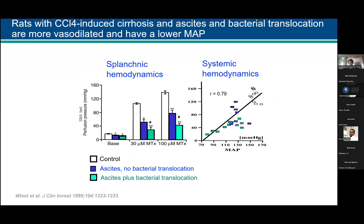Later studies used rats with carbon tetrachloride-induced cirrhosis and ascites. Controls showed ascites without bacterial translocation already had a decrease in superior mesenteric artery perfusion pressure — so they were somewhat vasodilated and not responding well to methoxamine, a vasoconstrictive agent. And if they had bacterial translocation — which occurs when there's increased portal pressure — there was an even lower response to methoxamine; they were more vasodilated. Systemically, animals with bacterial translocation had the lowest mean arterial pressure, while those with ascites had an intermediate degree of vasodilation and decreased MAP.